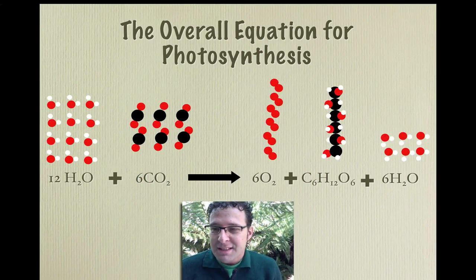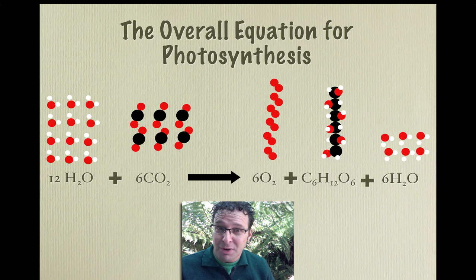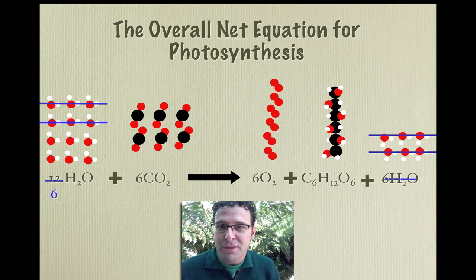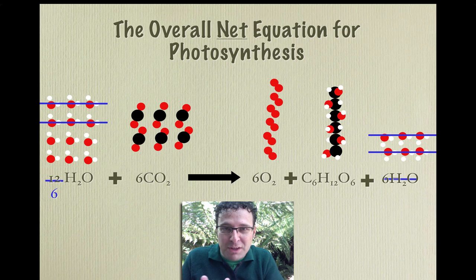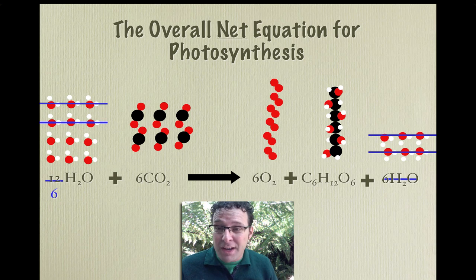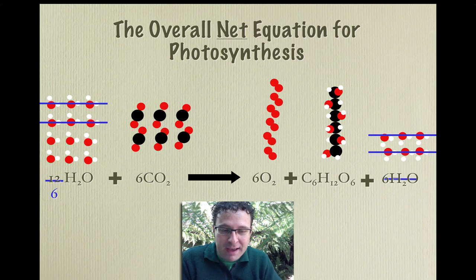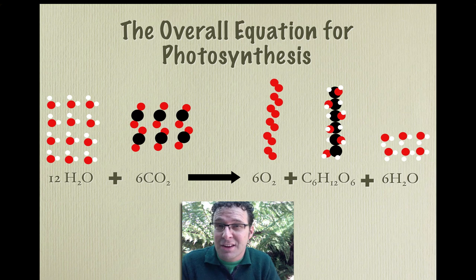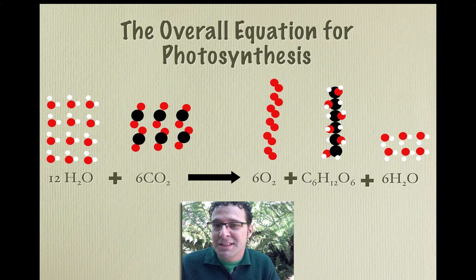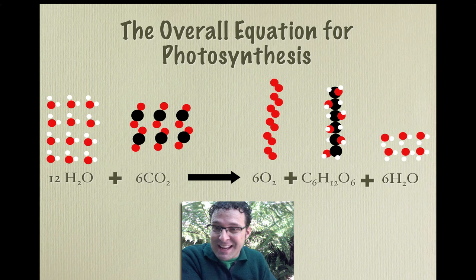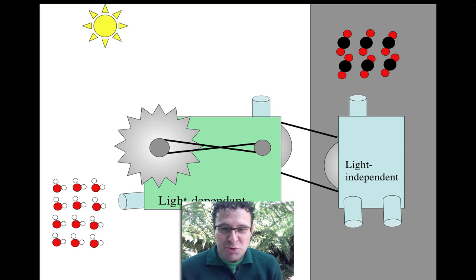The overall equation for photosynthesis is like this. We have 12 water molecules going in and six carbon dioxide molecules going in, and we've got six oxygen molecules coming out, one glucose molecule, and six water molecules coming out. Very often, though, it's represented as a net equation because if you've got 12 water molecules going in and you get six back, then the overall net equation is six water molecules going in. But I do like it represented like this, and I think on the VCE Unit 3 exam you're probably better off to look at it like this because it better represents what actually happens in photosynthesis - as we'll see, with 12 water molecules going in, we get six water molecules back, but those six are newly created.